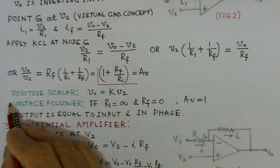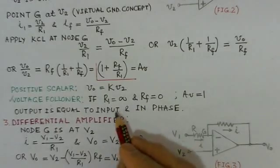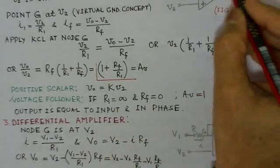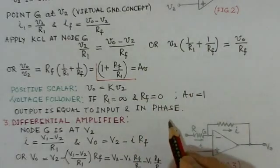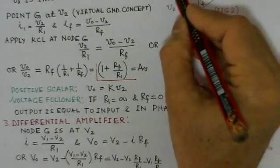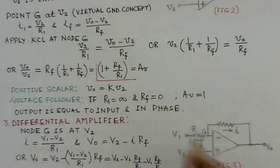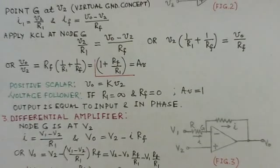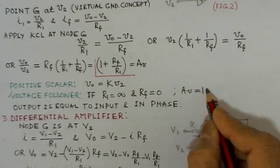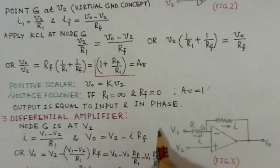A very important derived circuit from the non-inverting amplifier is the voltage follower. When R1 is taken as infinite (open) and RF is zero (shorted), the circuit becomes a voltage follower. Here the voltage gain AV is 1, meaning the output equals the input and is in phase.